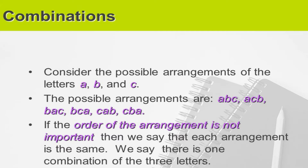The possible arrangements are A-B-C, A-C-B, B-A-C, B-C-A, C-A-B, and C-B-A. If the order of arrangement is not important, then we can say that each arrangement is the same. So we say there is one combination of the three letters. When we say combination, the order of arrangement is not important. So if there are three letters, even if you arrange it in six different orders, still they are the same. That is combination.